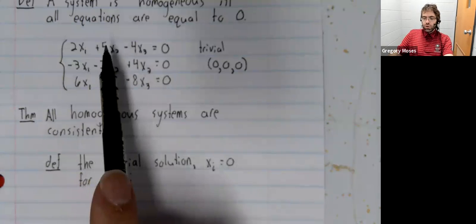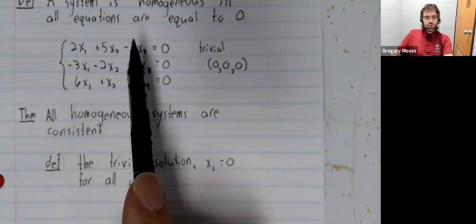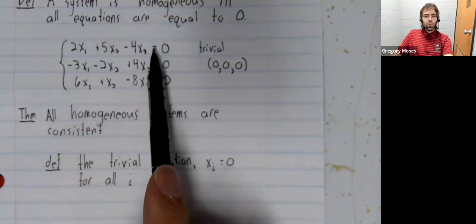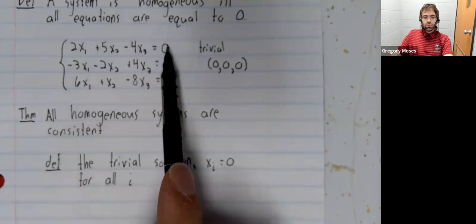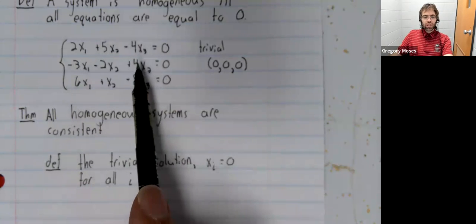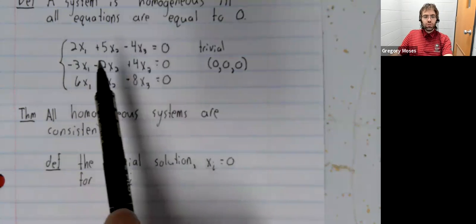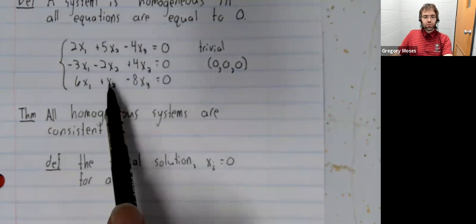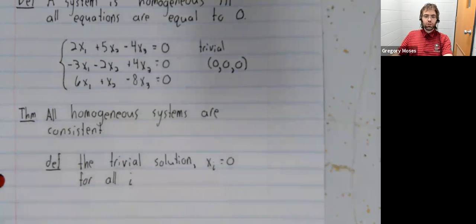2 times zero plus 5 times zero minus 4 times zero is equal to zero. And likewise, zero minus zero plus zero is zero. Zero plus zero minus zero is zero.